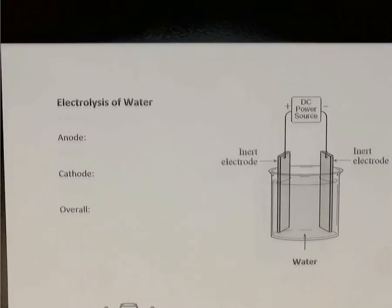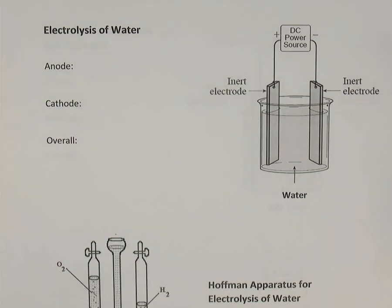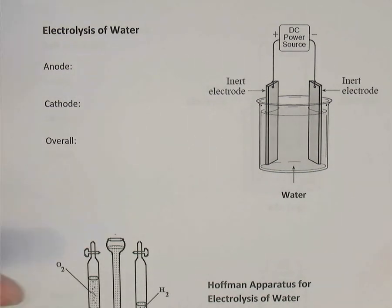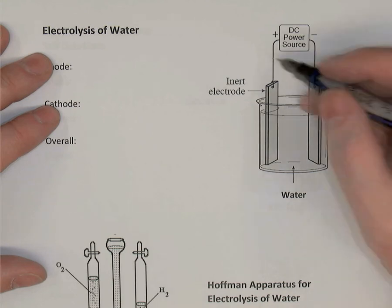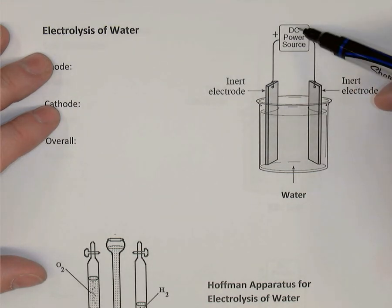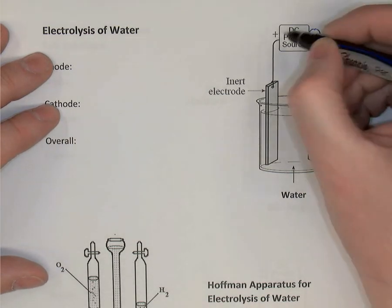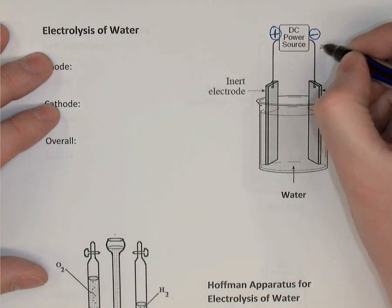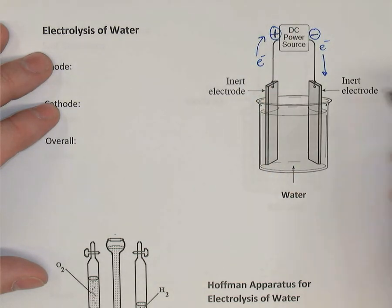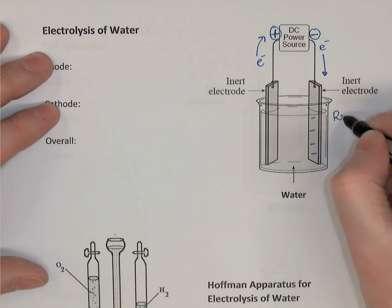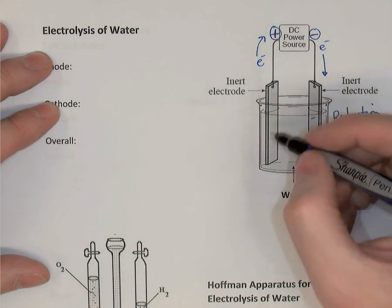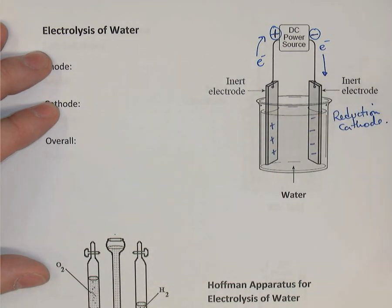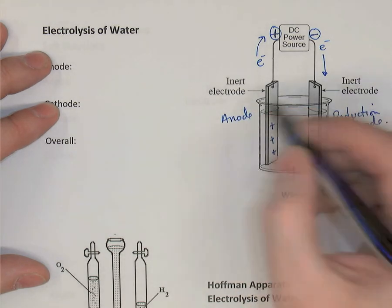The second type of electrolysis is the electrolysis of pure water. We have a beaker full of water with two inert electrodes — platinum or graphite — attached to a power source providing direct current. The negative terminal is on the right and the positive terminal is on the left. Electrons flow into the right electrode, making it negative, where reduction will occur — that's the cathode. Electrons leave the left electrode making it positive — that's the anode where oxidation occurs.